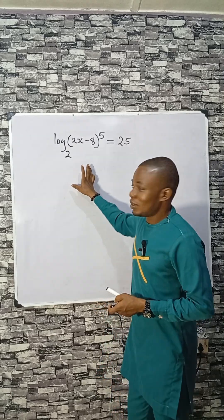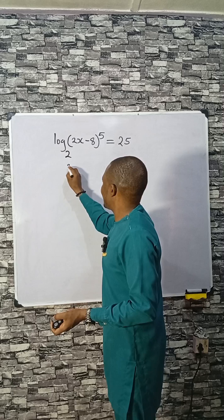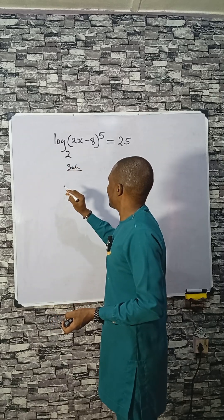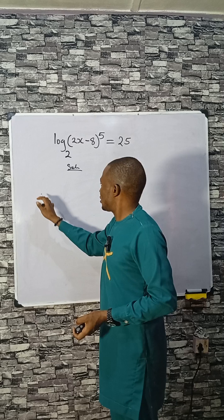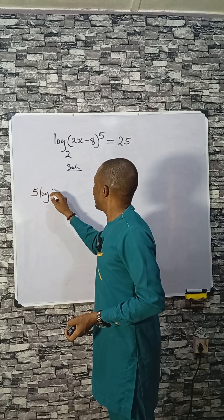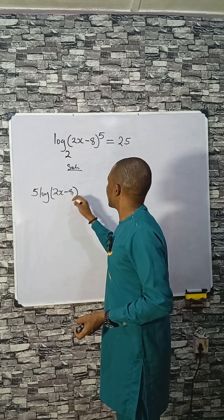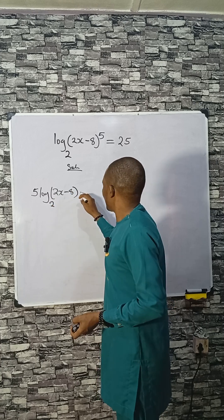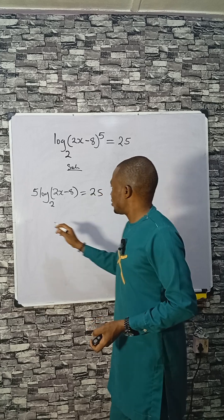Let's see how we can do this. Let's simplify this solution. The first thing you need to do is take this to this side, that will be 5 log(2x-8) base 2 equals 25.